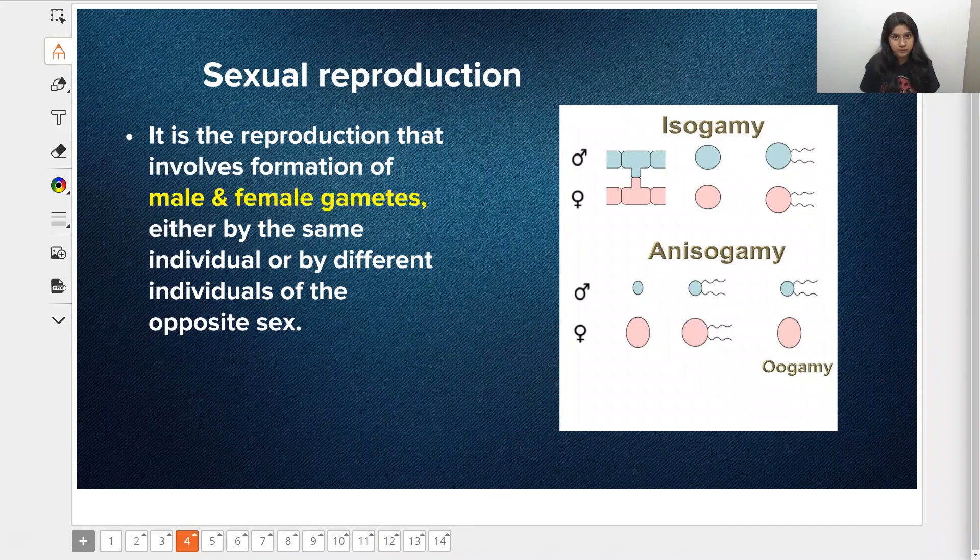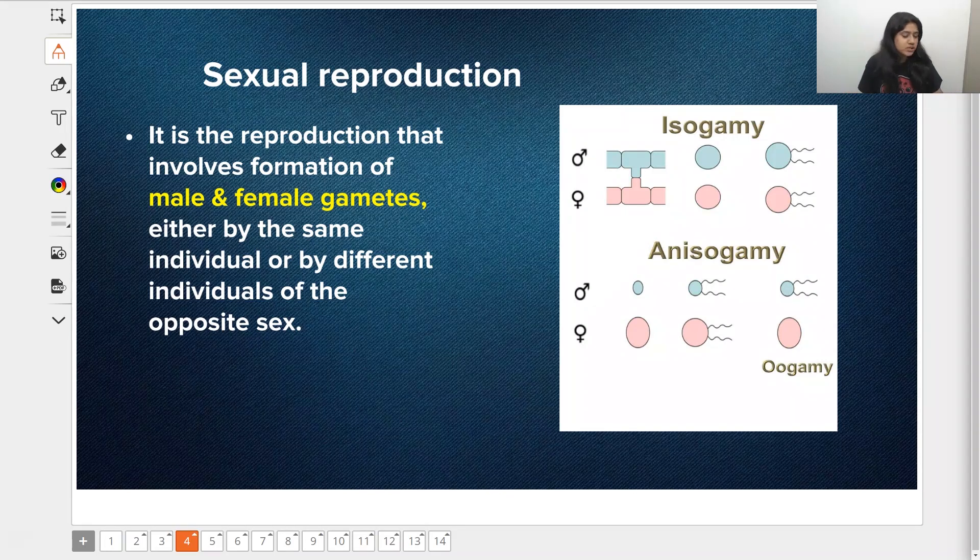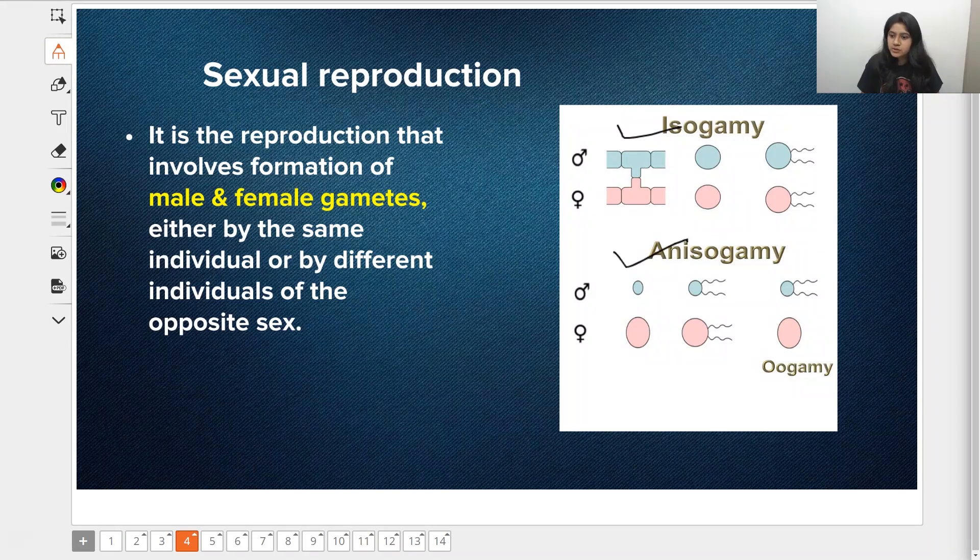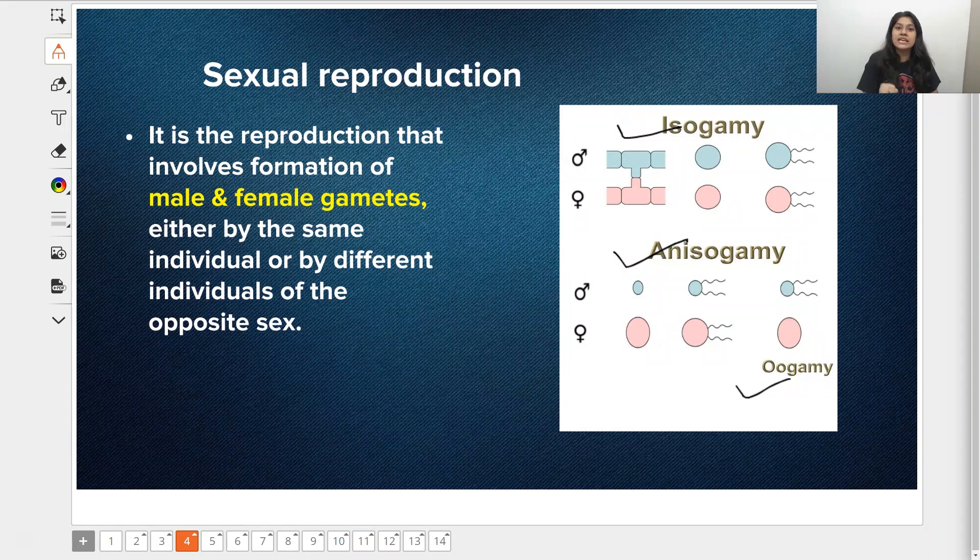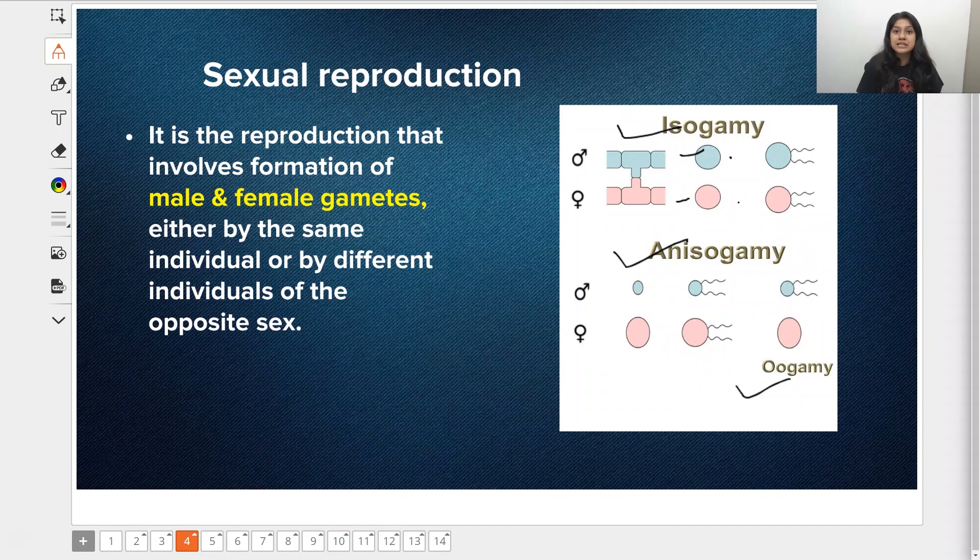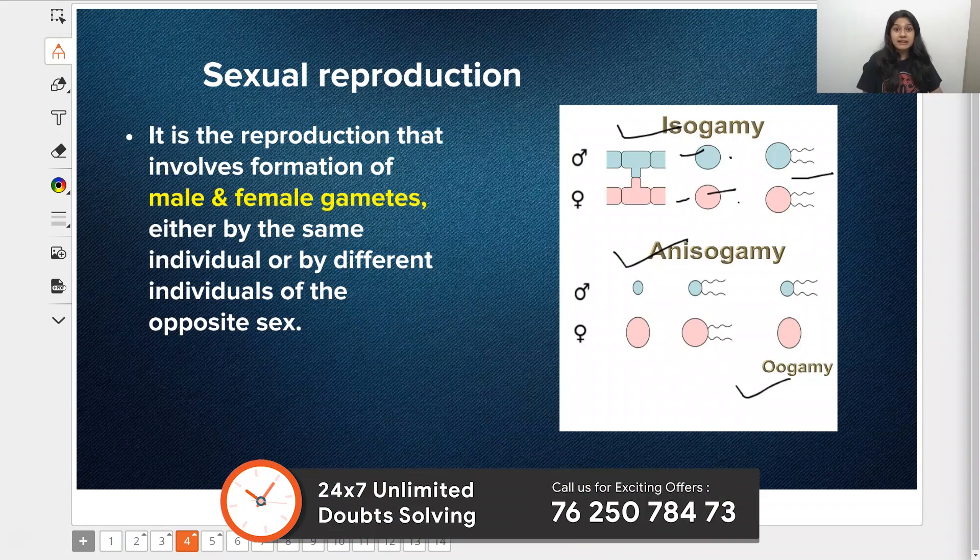Here on the screen, we're discussing isogamy. Can you see the isogamy and anisogamy? What's the difference? See the structure of the gametes. In isogamy, male and female are completely the same - they are either motile or non-motile. In anisogamy, the male gamete is not huge in structure, it's very small, and could be motile or non-motile.